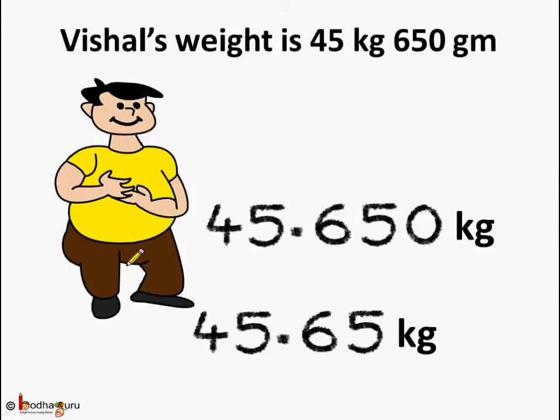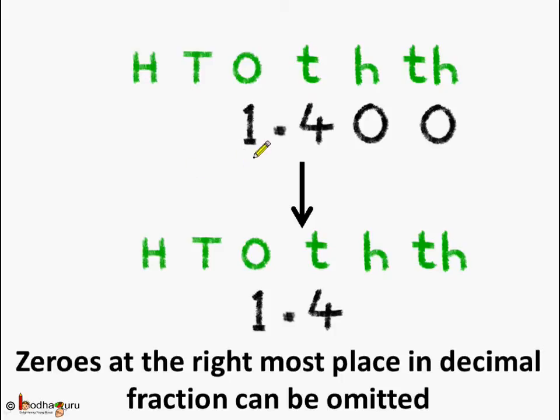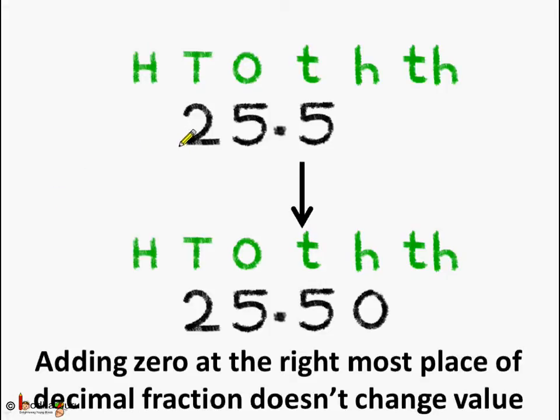Vishal's weight is 45.650 kgs or we can also say Vishal's weight is 45.65 kgs. Both are same. Similarly, we can say 1.400 can be written as 1.4 because we can omit the zeros at the rightmost place in the decimal fraction. Both mean the same value. 1.400 and 1.4 are the same. The other way round is also true. If we have a decimal number 25.5, it can also be written as 25.50. Adding zeros at the rightmost place of the decimal fraction doesn't change its value. 25.5 and 25.50 mean the same value.